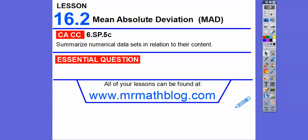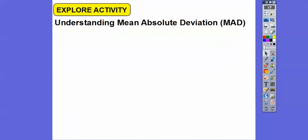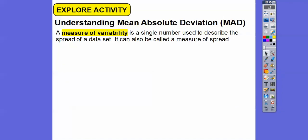Here's our common core strand for our teachers. We're going to summarize some number data sets in relation to their context. So how can we determine and use Mean Absolute Deviation or MAD of a set of data points?